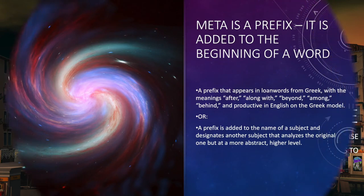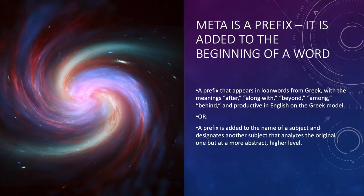Meta is a prefix — it is added to the beginning of a word. It is a prefix that appears in loanwords from Greek, with the meanings after, along with, beyond, among, behind, and productive in English on the Greek model. Or, a prefix added to the name of a subject that designates another subject which analyzes the original one but at a more abstract, higher level.